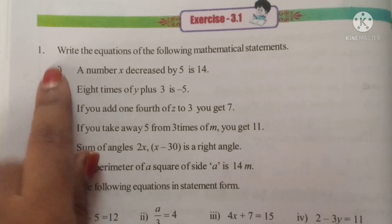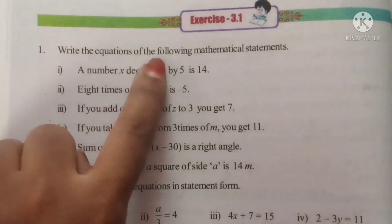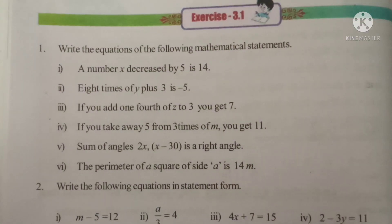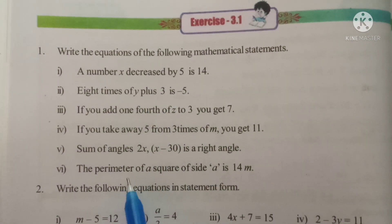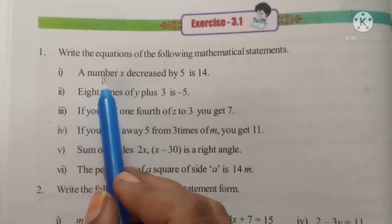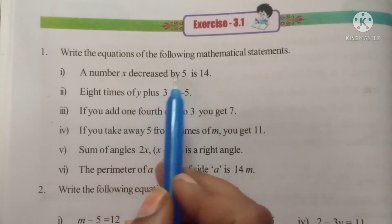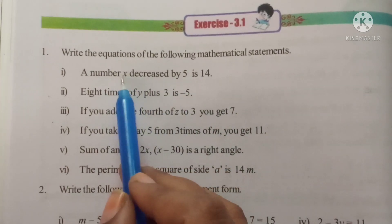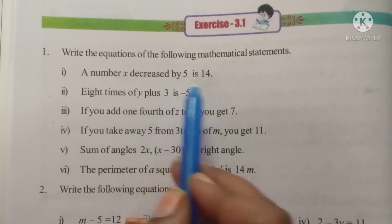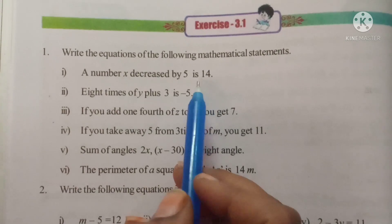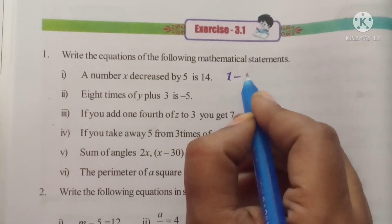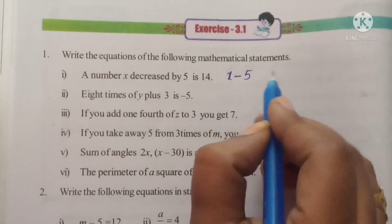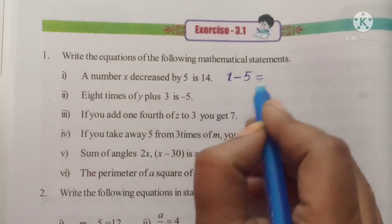See the first question: Write the equations of the following mathematical statements. Some mathematical statements are given and we have to write them in equation form. See the first one: a number x decreased by 5 is 14. So if you have a number and decrease it by 5, the answer is 14. So x minus 5 is equal to 14.